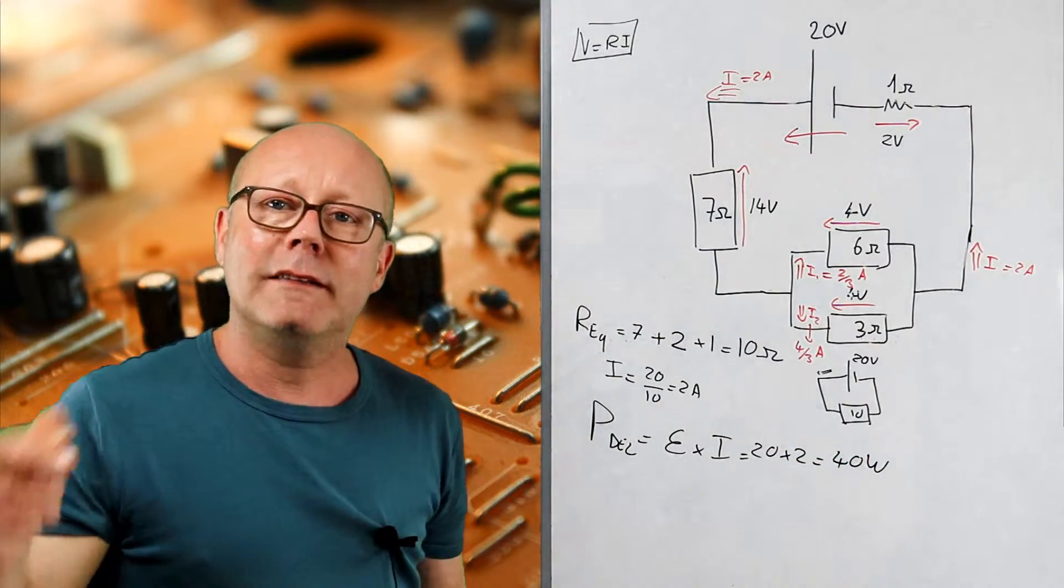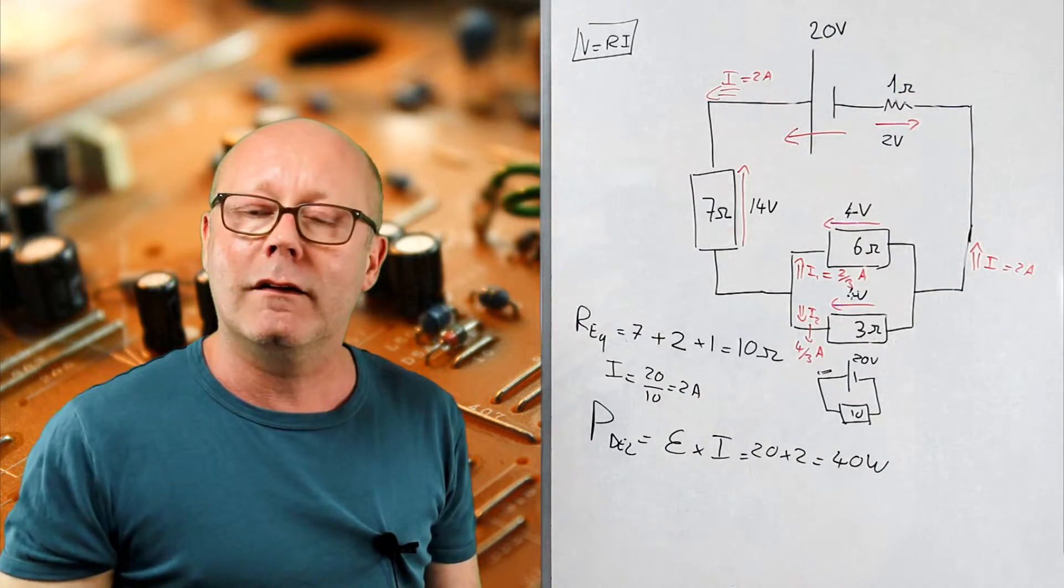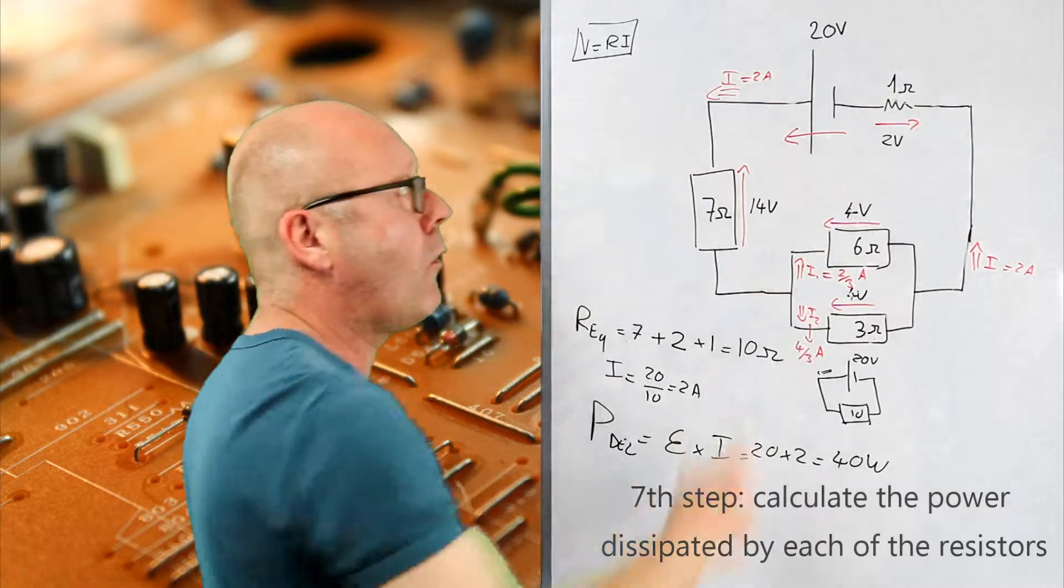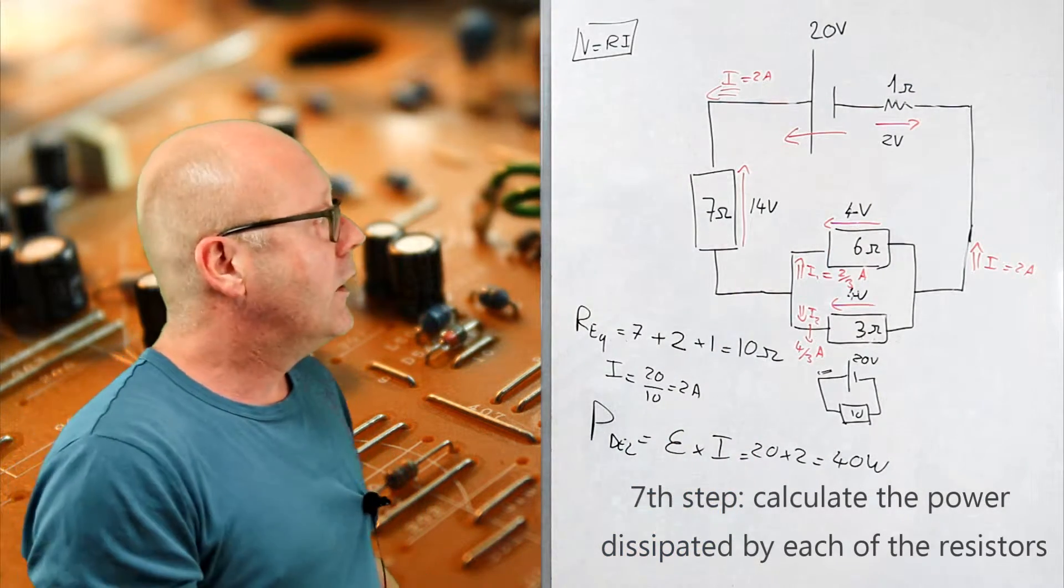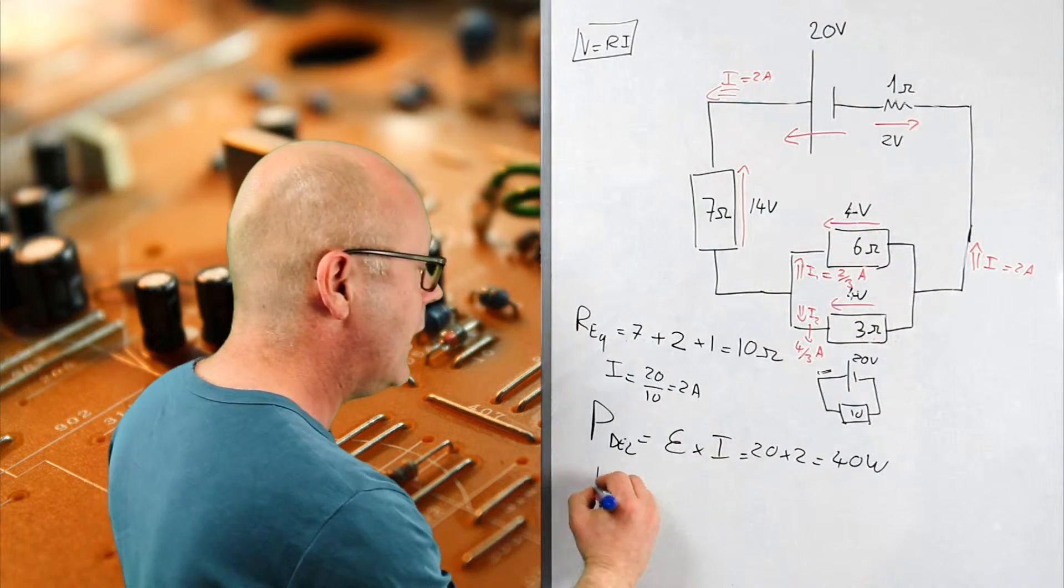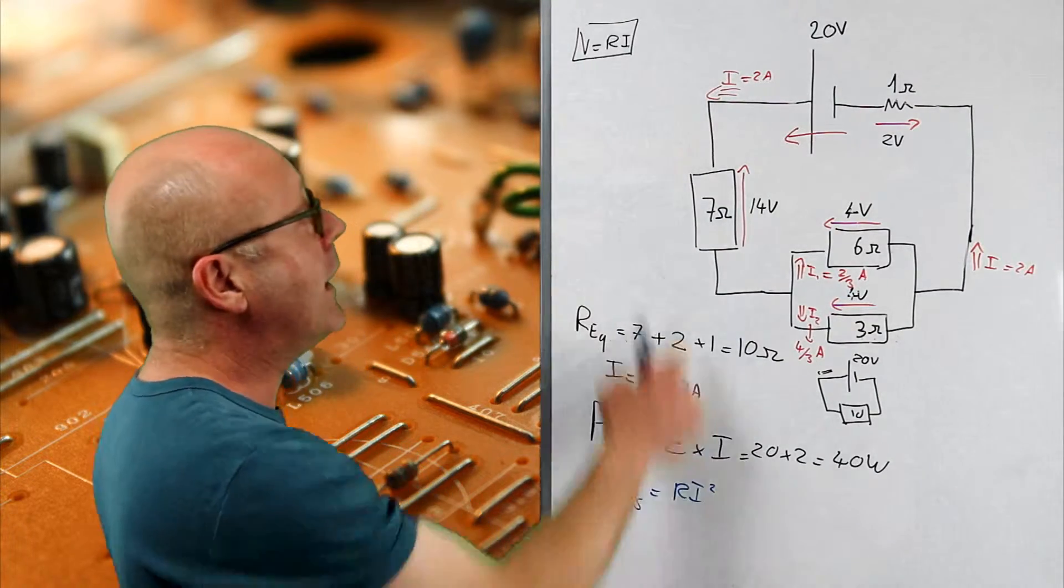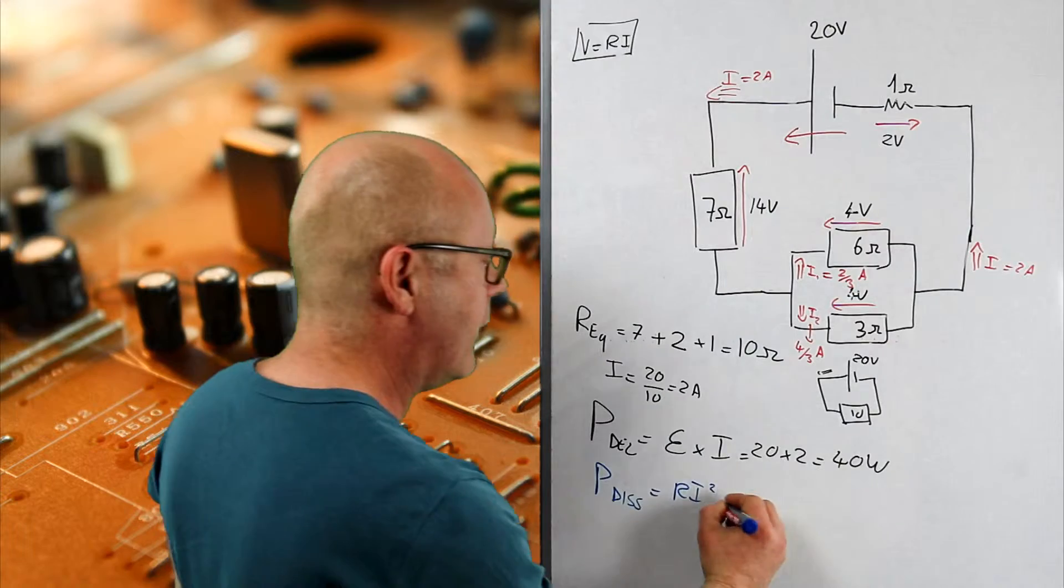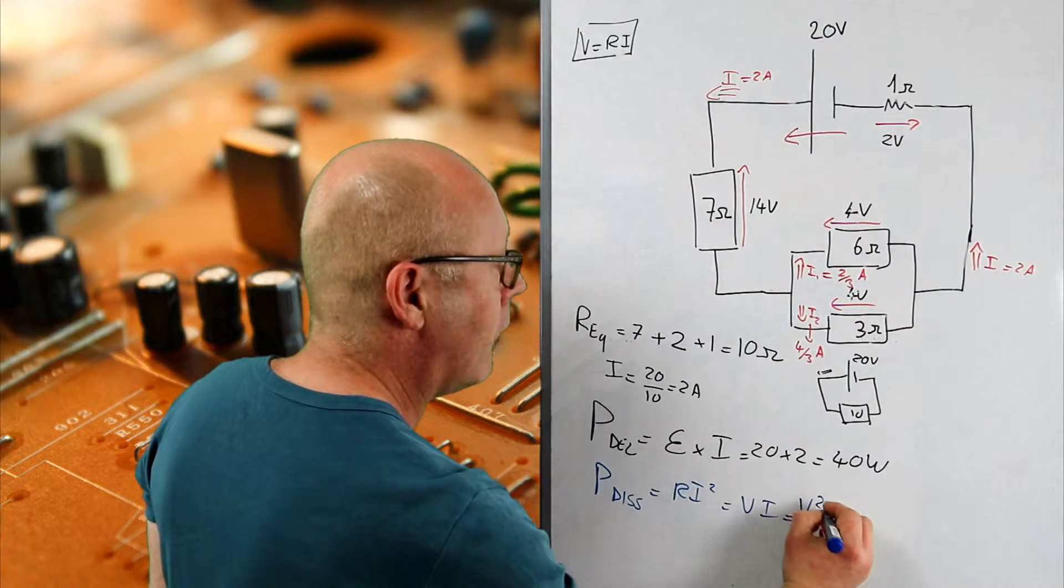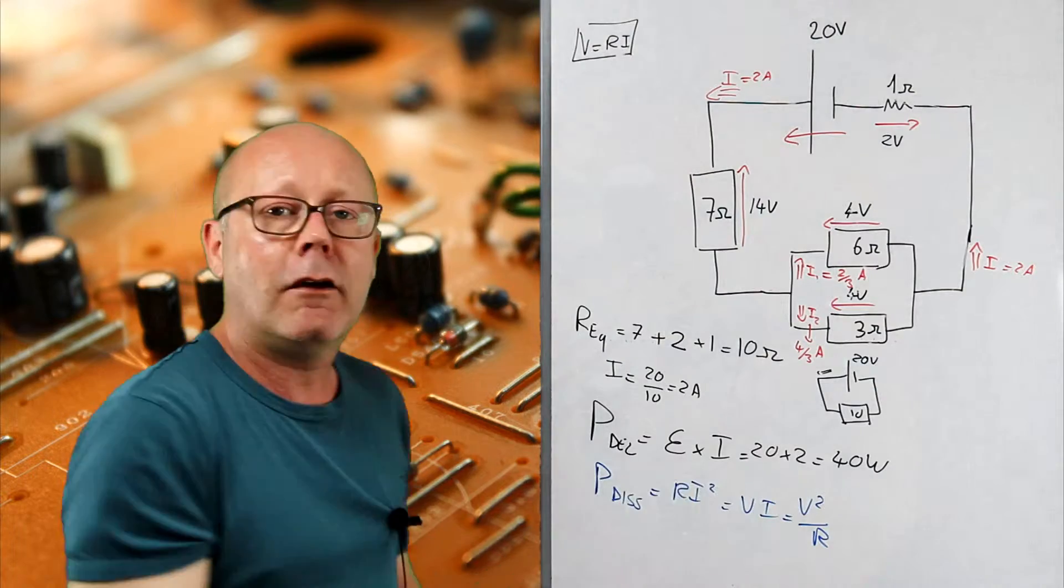So if 40 watts enter the circuit, I have to have 40 watts that come out. So the total power dissipated will be 40 watts. Let's check this out. We are going to calculate the power dissipated by all the resistors. So remember the formulas for power dissipated by a resistor. It's either R I squared, but if I replace one of the I's by V on R, I get V I, or if I replace the other I by V on R, V squared on R. So depending on what is easiest to calculate, I can pick up any of these formulas.